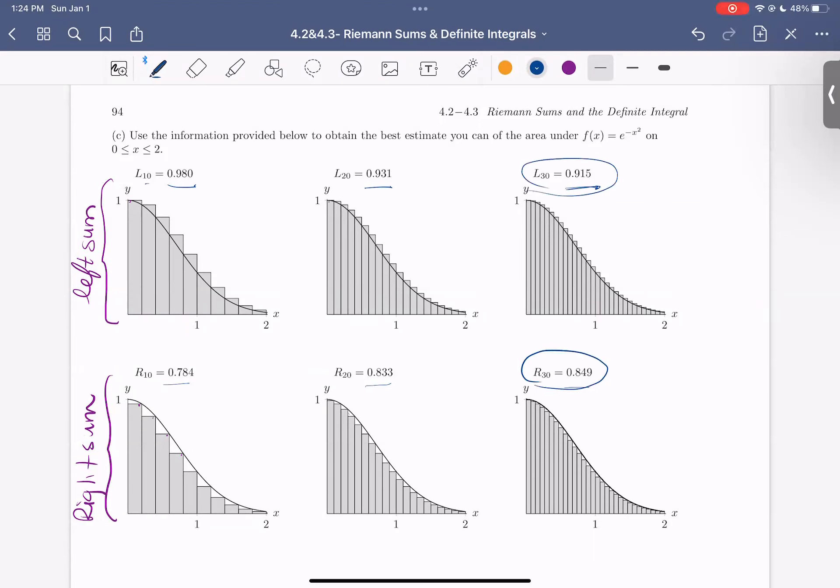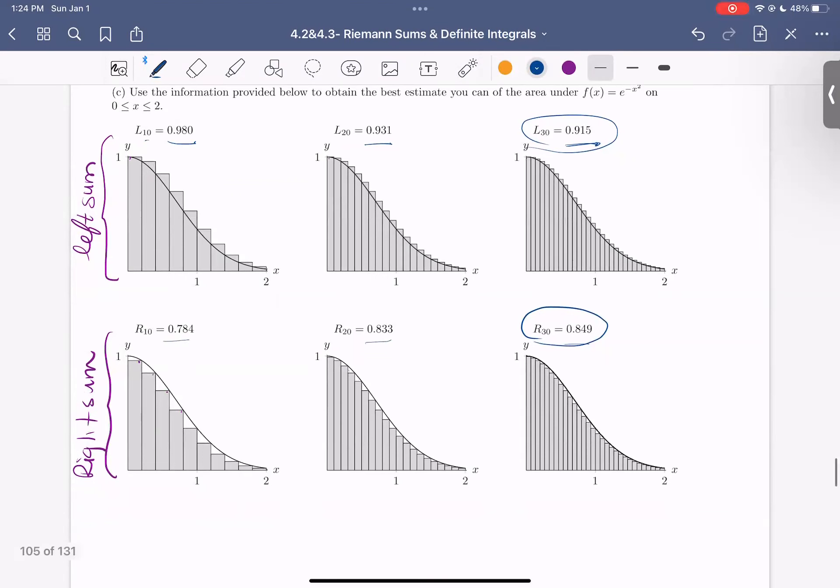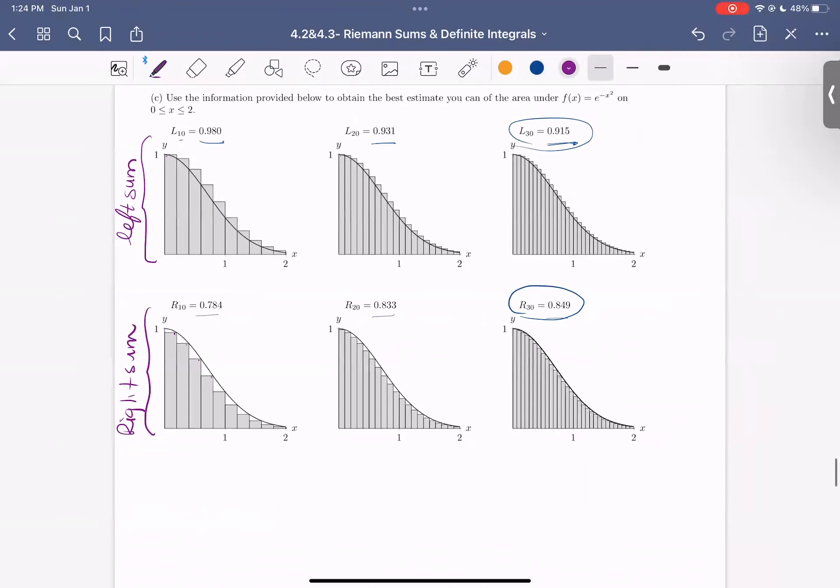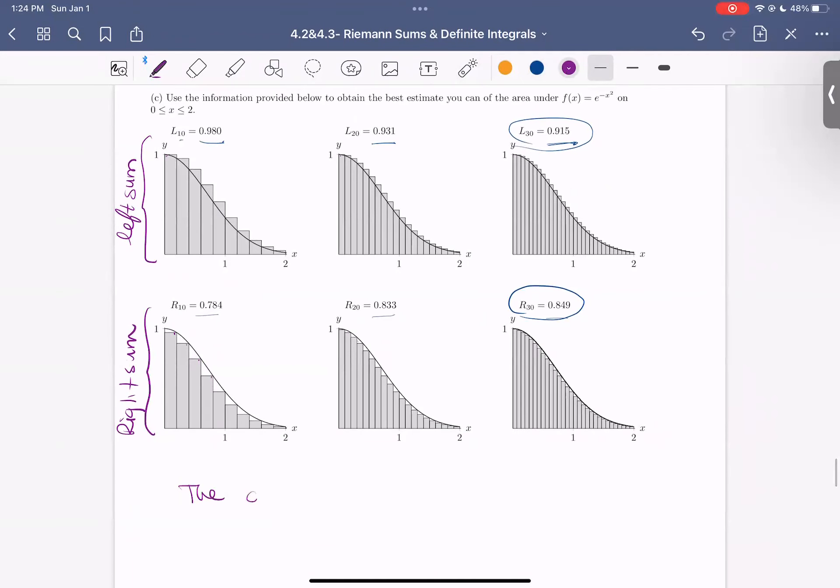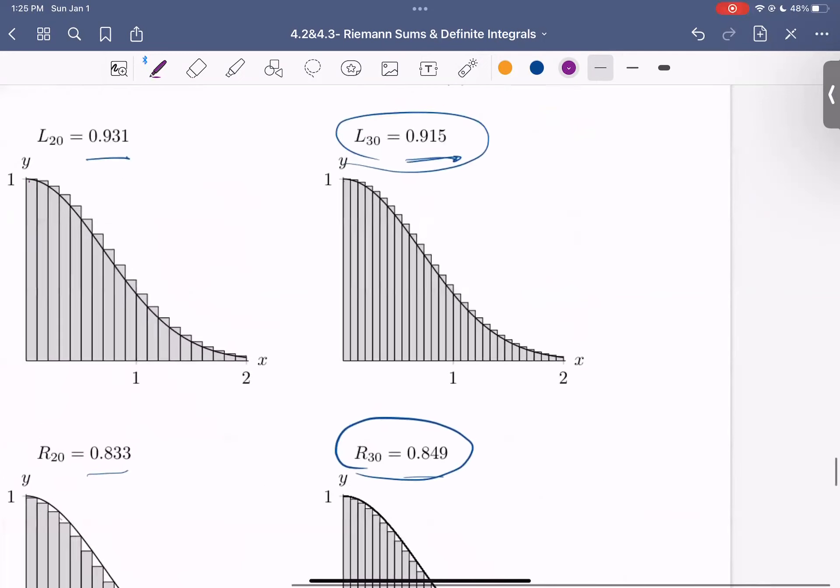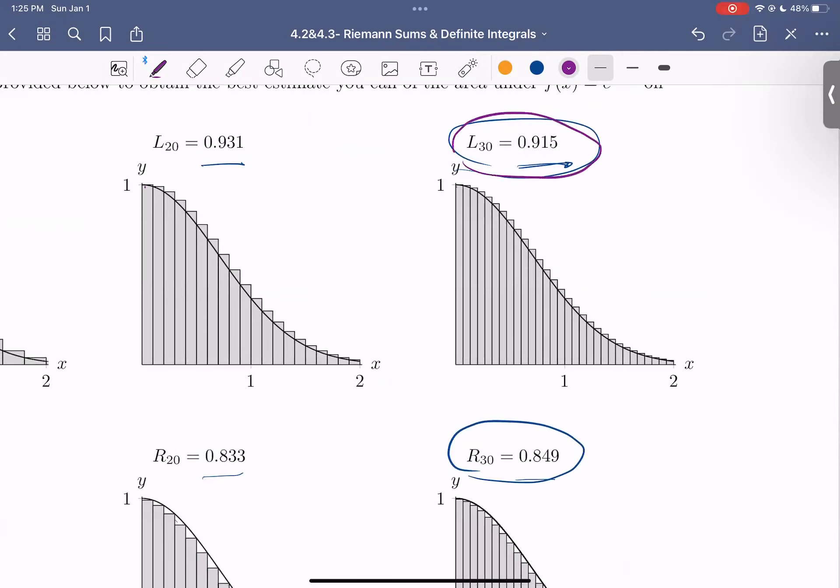So then what can we say about the area under the curve using these examples? Well, similar to what we just saw, we know that the area under the curve is between 0.849 and 0.915. Again, we can just look at these rectangles to see that the left sum rectangles are overestimating our area. See all this extra area they're computing?